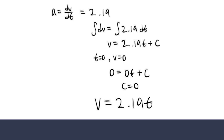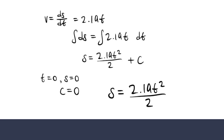This equation is then integrated to find velocity with respect to time. The initial condition of when time is zero and velocity is zero is applied to find the constant of integration c, which happens to be zero, so v equals 2.19t. Then for the equation of displacement, using a differential equation linking velocity, displacement and time, we substitute the velocity into the equation v equals ds over dt. This equation is then integrated to find displacement with respect to time. The initial condition of when time is zero and displacement is zero is applied to find the constant of integration c, which again is zero. Hence our displacement equation is s equals 2.19t squared over 2. Initial conditions are needed as the equations are integrated without limits and therefore would have constants of integration.